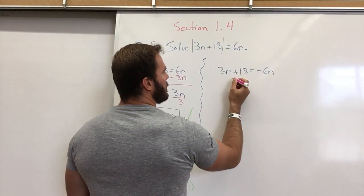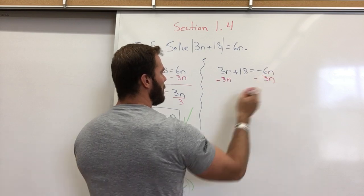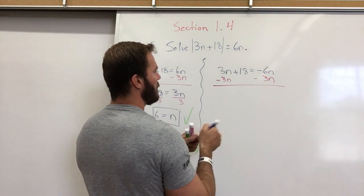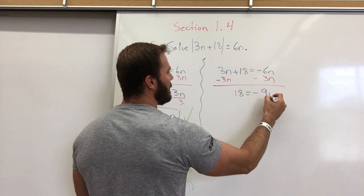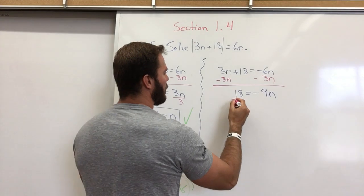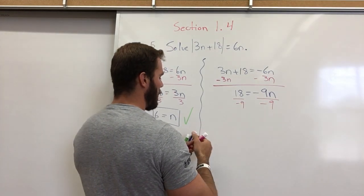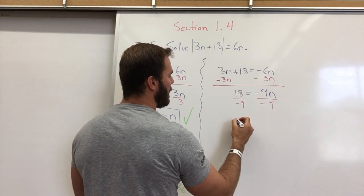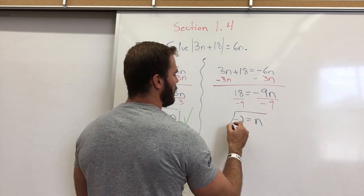Now let's solve the second equation. We subtract 3n on both sides, which gives us 18 equals negative 9n. Dividing both sides by negative 9, we get 18 divided by negative 9 equals negative 2, so n equals negative 2.